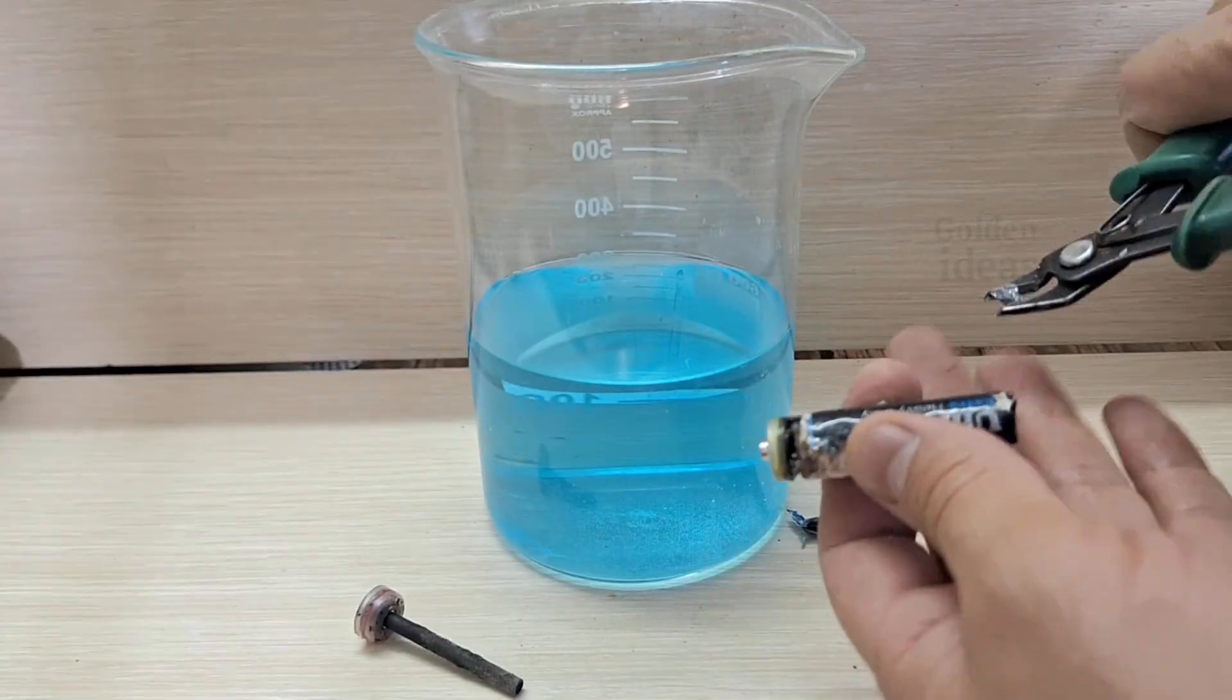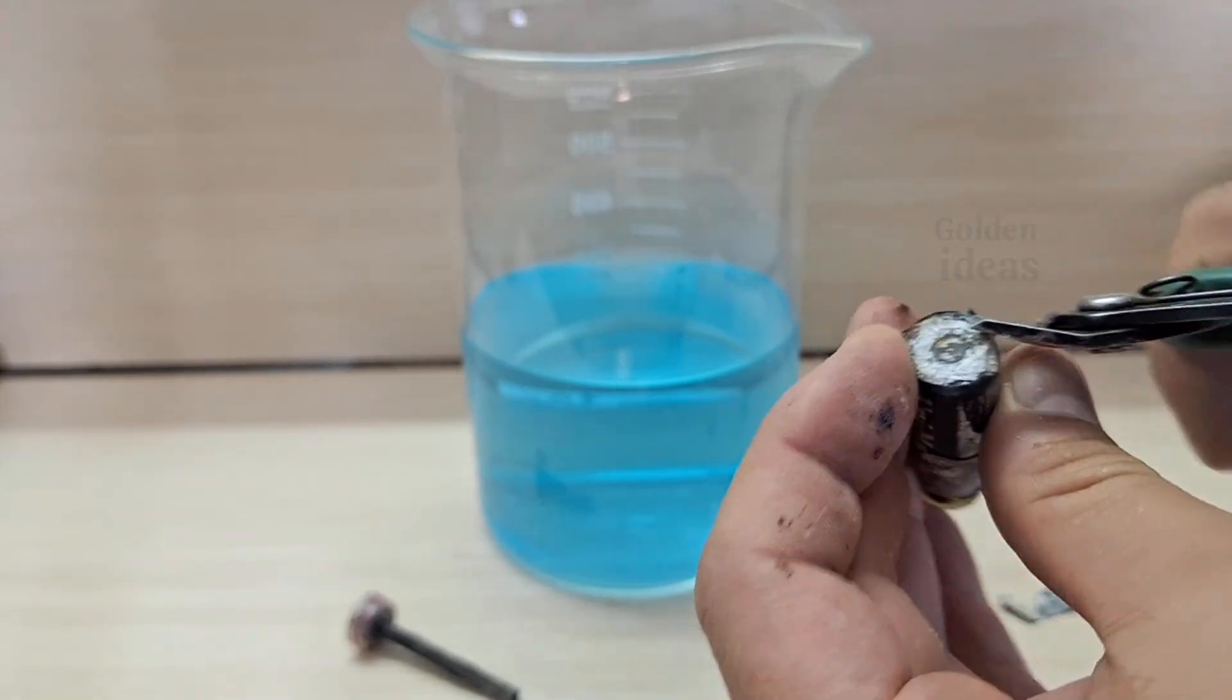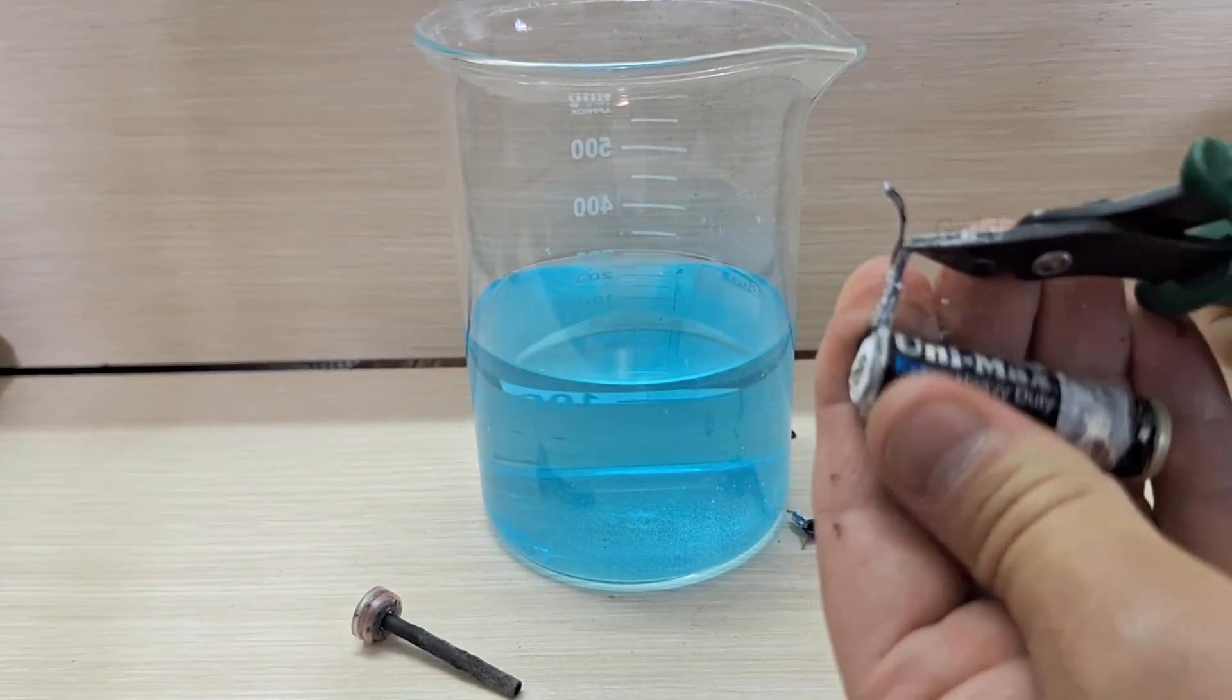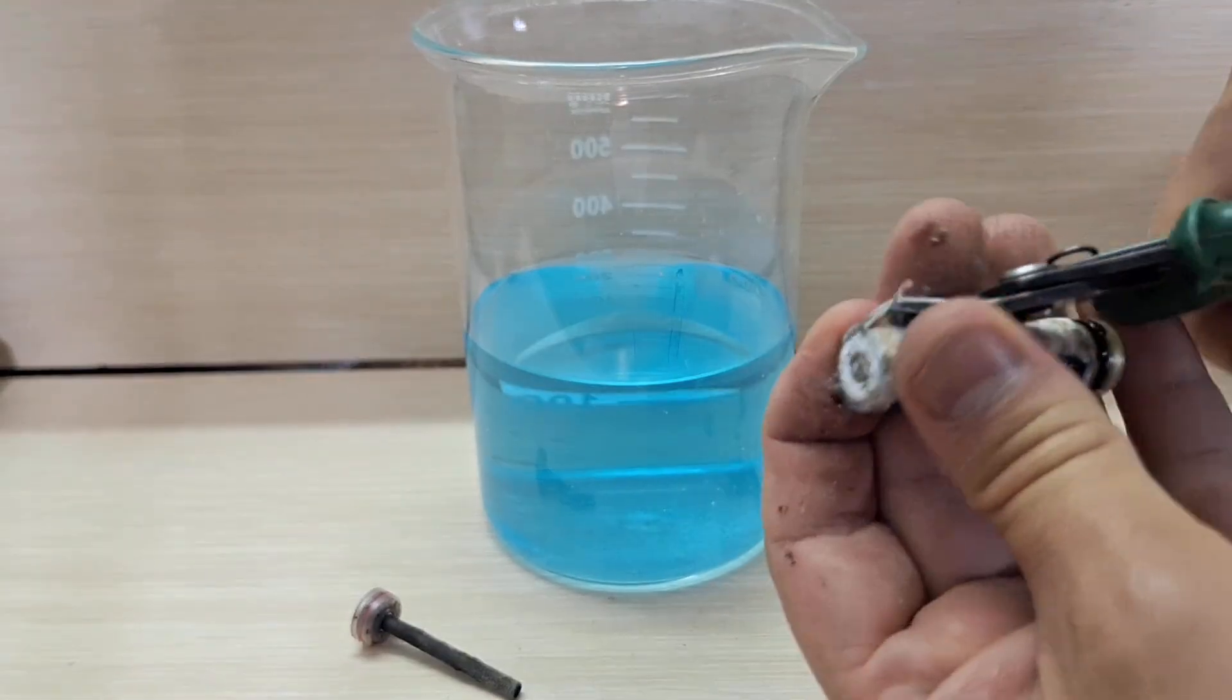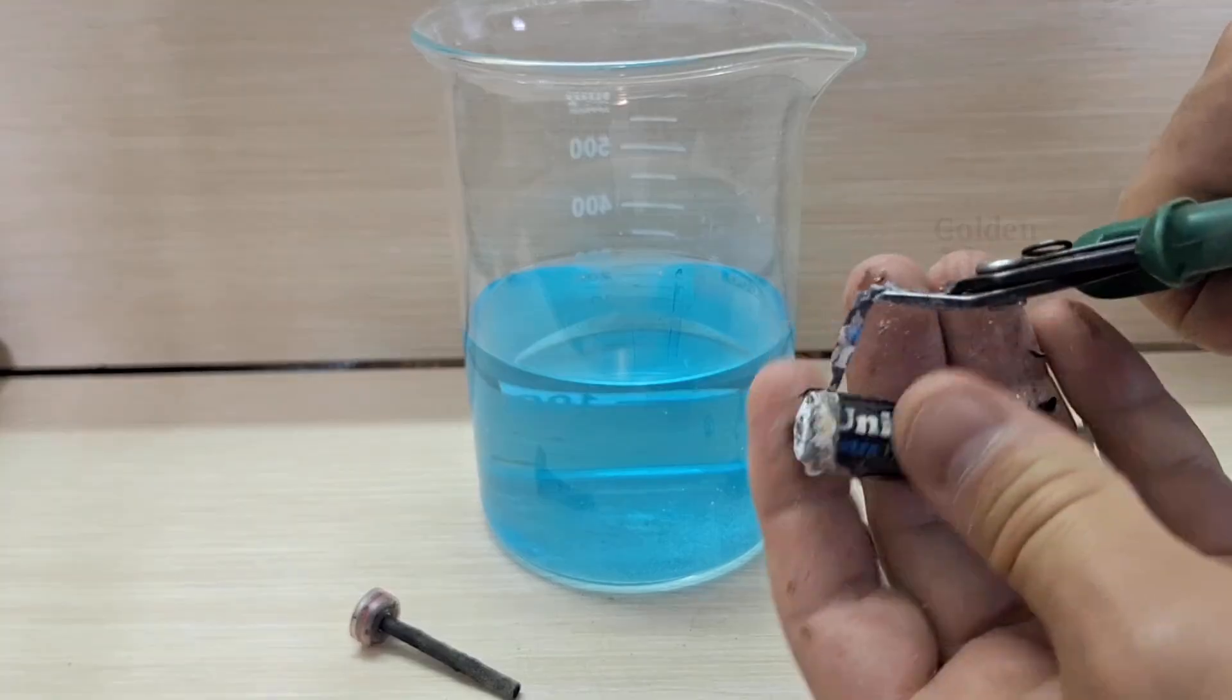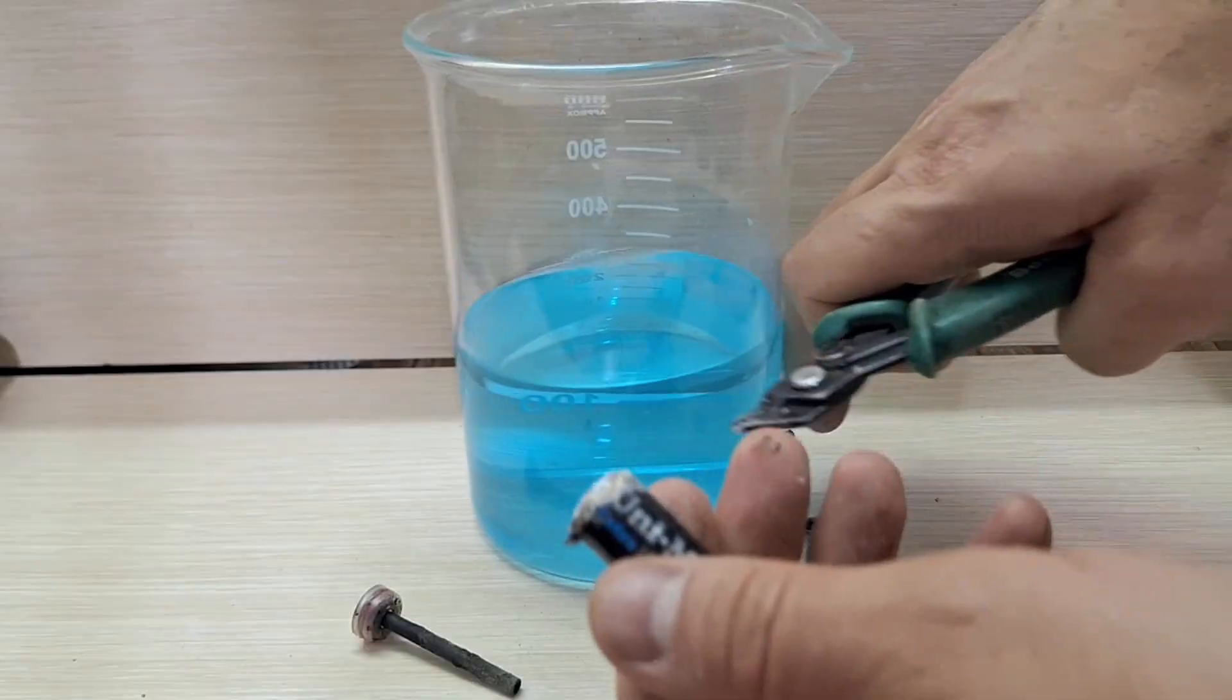To safely remove the graphite rod from the battery, you need to be careful and gentle. If you hit or force it, the graphite can easily break, so take your time and be patient. Next in the video, we'll take a look at how graphite reacts with acid. Will it dissolve? What do you think?